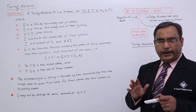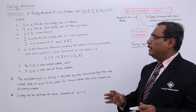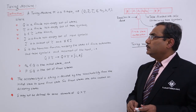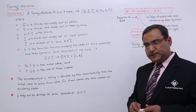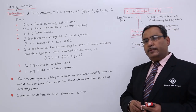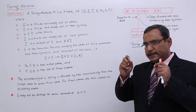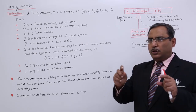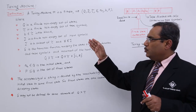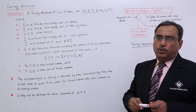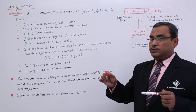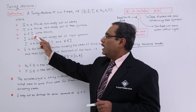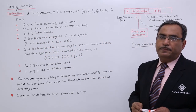Q is a finite non-empty set of states. Tau is a finite non-empty set of tape symbols. There will be one tape with different cells, and at different cells there will be some symbols — all those symbols are kept in tau. Out of those symbols, one symbol will be blank, so B is an element of tau representing the blank.